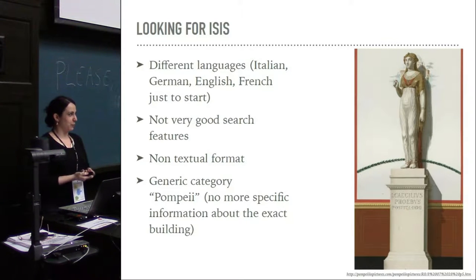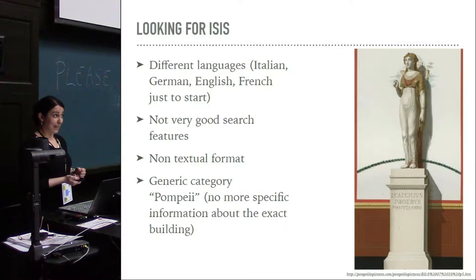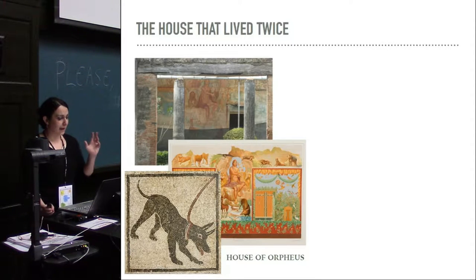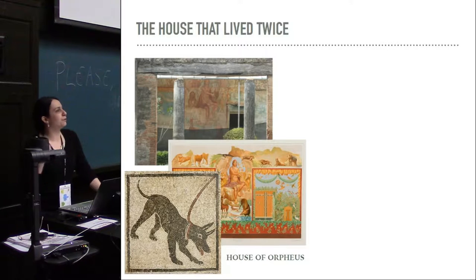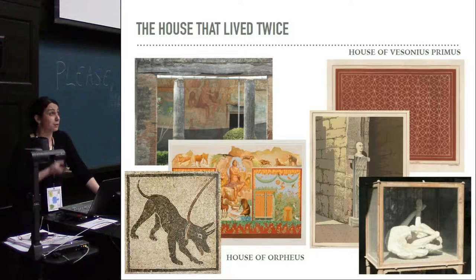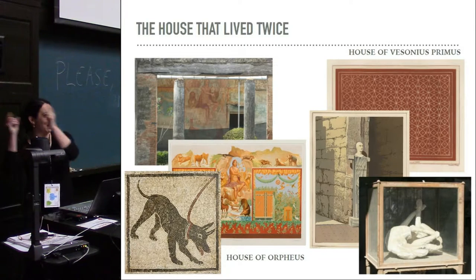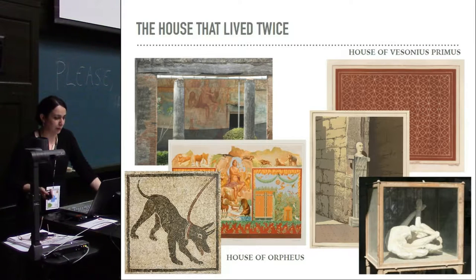There is another huge issue if you work with Pompeii: buildings change name through time. I didn't meet this problem with the Temple of Isis, because that has always been called the Temple of Isis. But that's not the case for many buildings in Pompeii. This is the House of Orpheus. If you look for the House of Orpheus, you find pictures focusing on the big fresco and this lovely mosaic dog. But the house was formerly known as the House of Isis Primus, and if you look for that name, you find completely different material — the plaster cast of the dog, and other visual material from publications when the house was still called that.